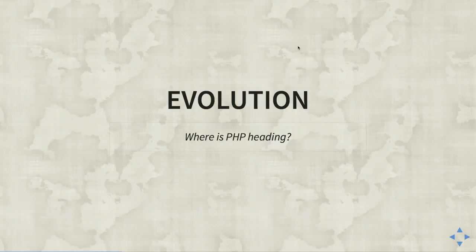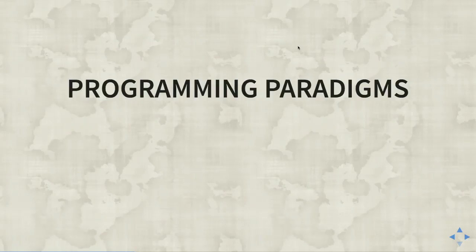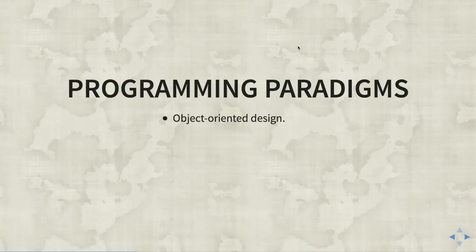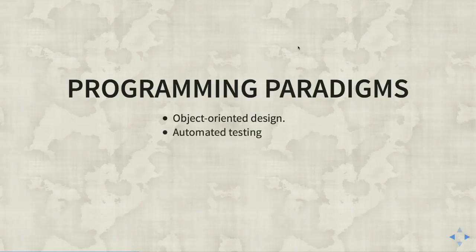Looking at where PHP is heading: programming paradigms are shifting. Early PHP code was very procedural, even copy-paste code — junior devs might copy something without knowing the security implications. Nowadays, a lot of PHP packages are very object-oriented. You can download a class or set of objects to do a set of tasks, and many packages have baked-in unit testing so you can run a test suite and ensure there are no regressions.